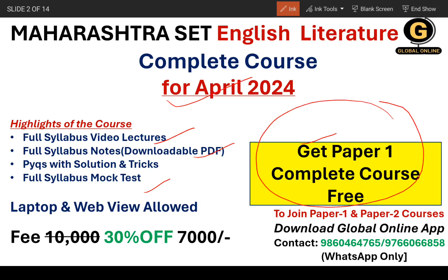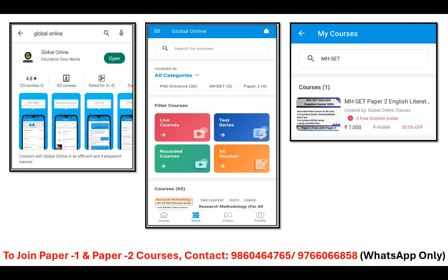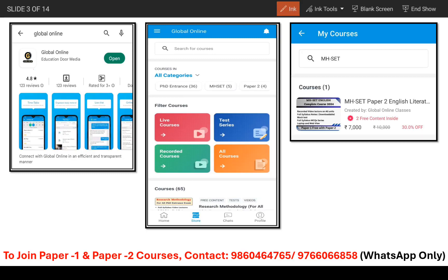The best part is that you are getting the complete course for paper 1 for free. To learn more, reach out to the provided contact number. Now if you want to watch the free videos, first download the Global Online App. Once you are in, head to the source section, and there you will find details for all the courses. Use the search bar to directly type in the course name and you will see an overview along with fees for the duration.